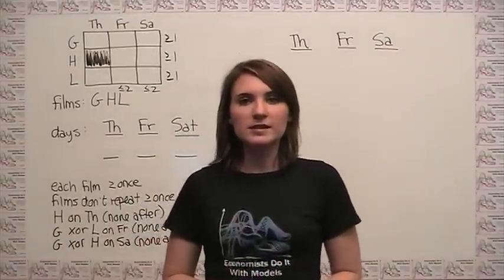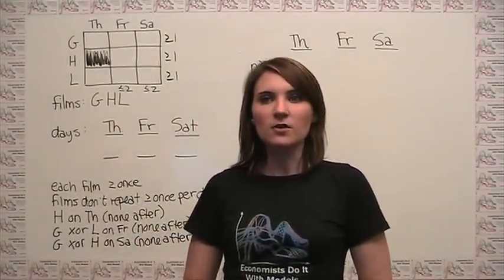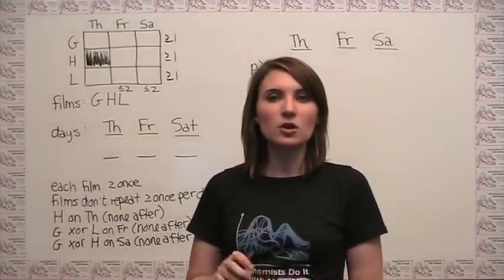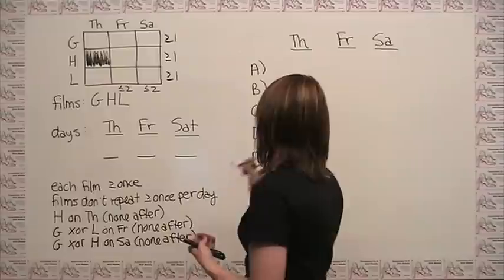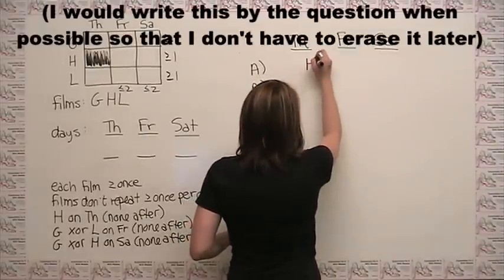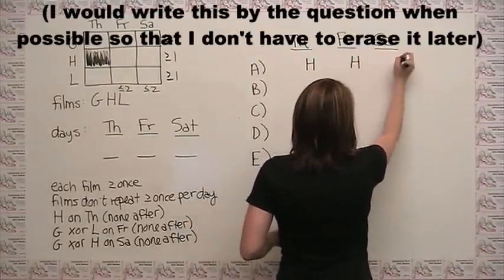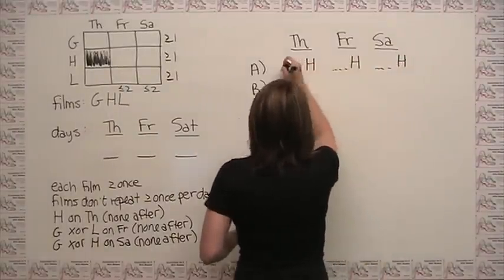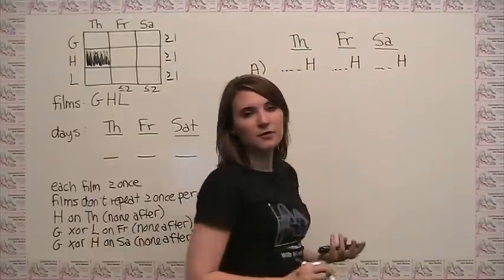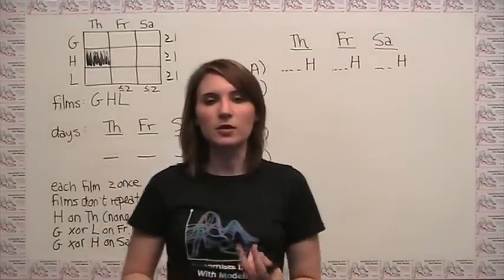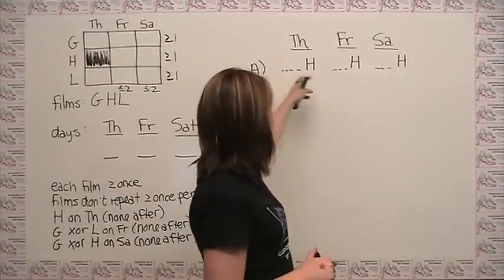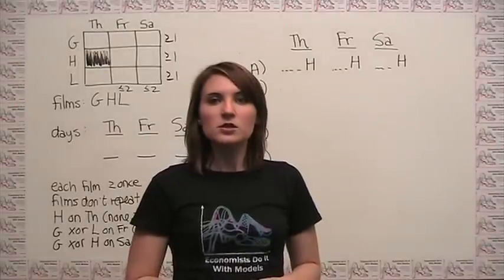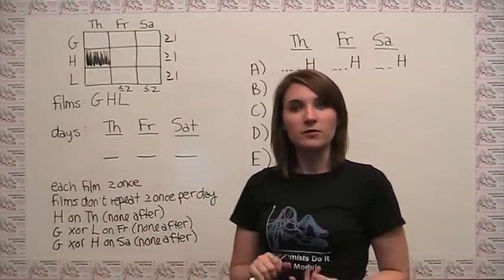If we look at choice A — Harvest is the last film shown on each day of the festival — we at least know how to place that information. I'll put a dotted line before it to remind myself that if a second or third film is shown on any of these days, it can only come before H. So let's look at the rules and see what else we can fill in.